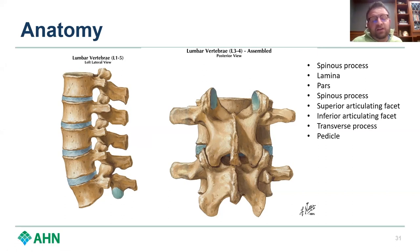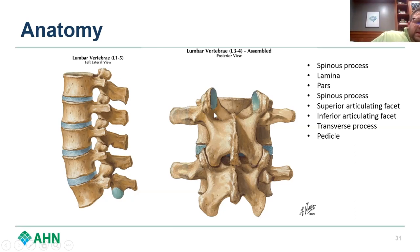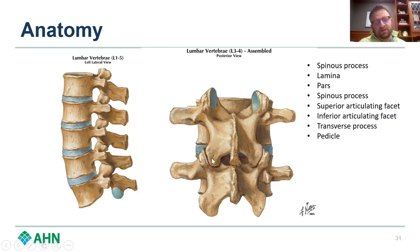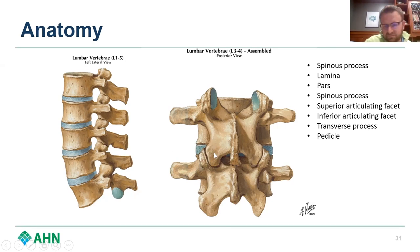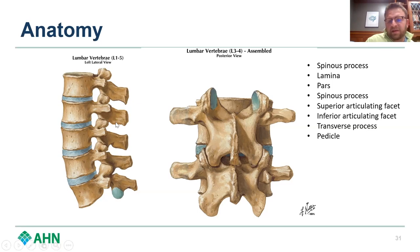Every vertebral body has a superior articulating facet and an inferior articulating facet. The superior articulating facet joins up with the vertebral body above, and the inferior articulating facet joins up with the vertebral body below. The inferior articulating facet corresponds with the superior articulating facet below. The PARS interarticularis is basically the bone in between these two joints.